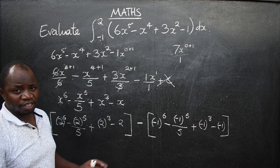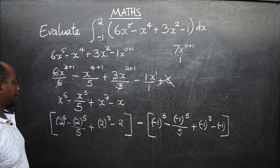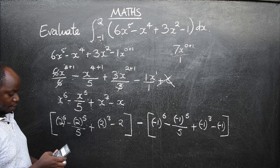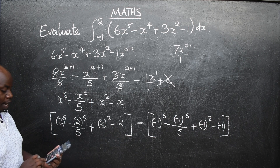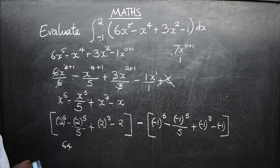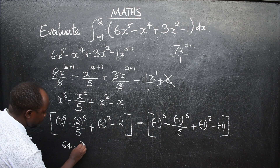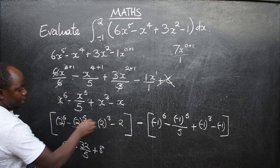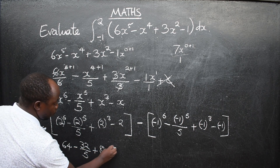Now simplify using a calculator. 2 to the power 6 is 64. 2 to the power 5 is 32, so we have 32 over 5. 2 to the power 3 is 8. Minus 2. Then on the other side: negative 1 to the power 6 gives positive 1, because 6 is an even number.